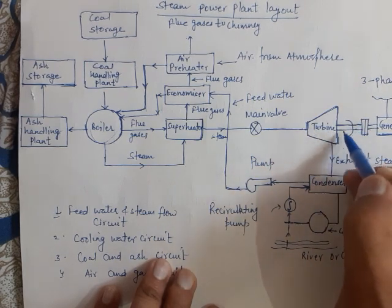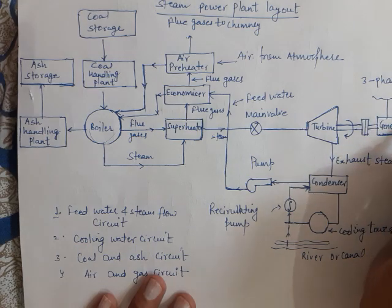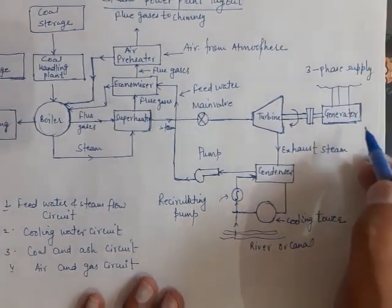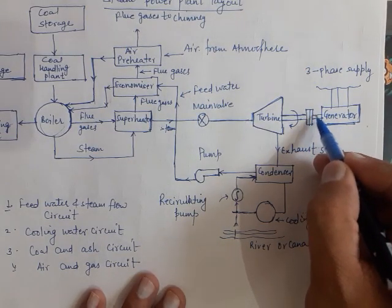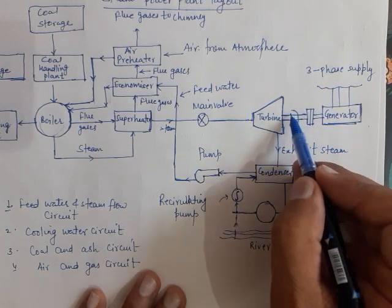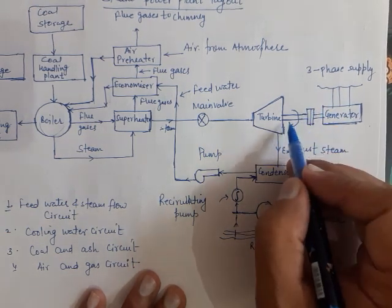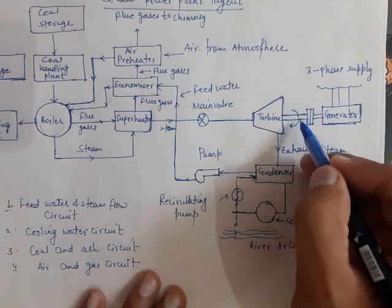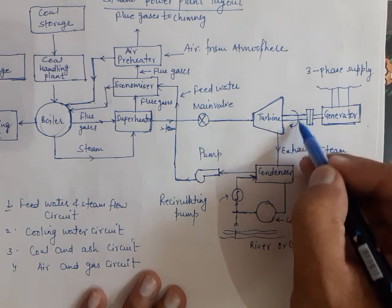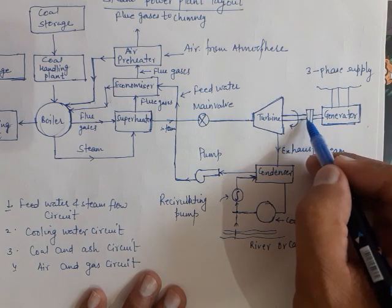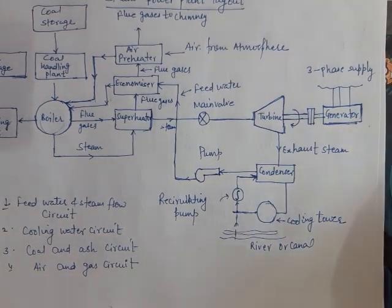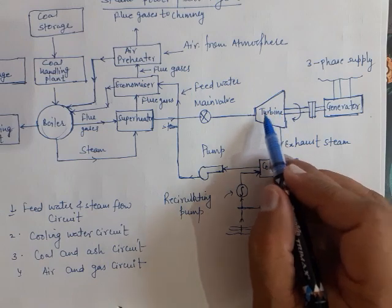The shaft of the turbine is coupled with the shaft of the generator. Inside the generator, the mechanical energy is converted into electrical energy. When steam works inside the turbine, the enthalpy of the steam is converted into kinetic or mechanical energy, rotating the shaft. This shaft drives the generator, which produces electrical power.